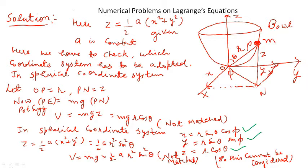Since z = r cosθ, when we find the potential energy of particle m it equals mgz = mgr cosθ. But the constraint gives z = (a/2)(x² + y²), and substituting x and y we get z = (1/2)a r² sin²θ. So the potential energy becomes mg · (1/2)a r² sin²θ. These results do not match, so we cannot use the spherical coordinate system for this problem.